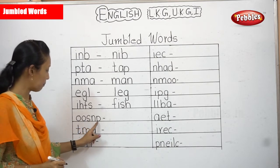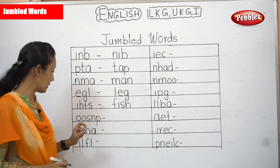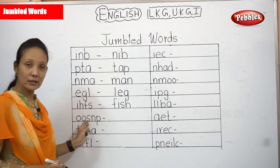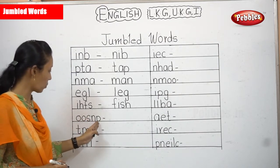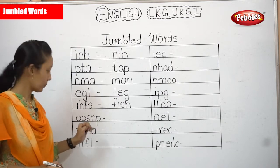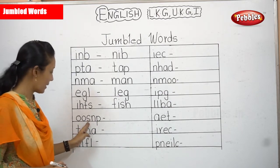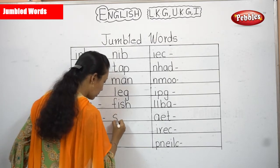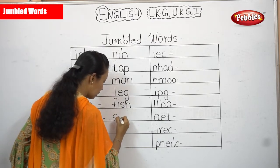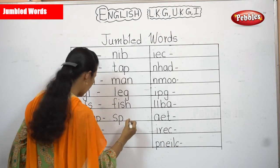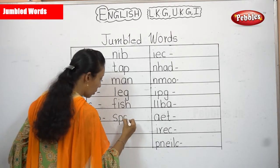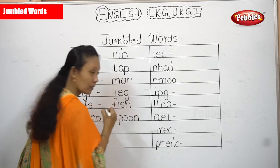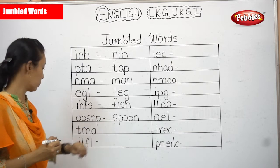Now O, O, S, N, P. What can the word be? Can we start with SOOP? No. Some of you, when you see the word, you know what the correct spelling is, isn't it? S, P, O, O, N — SPOON! Did you get the correct word? Right, spoon.